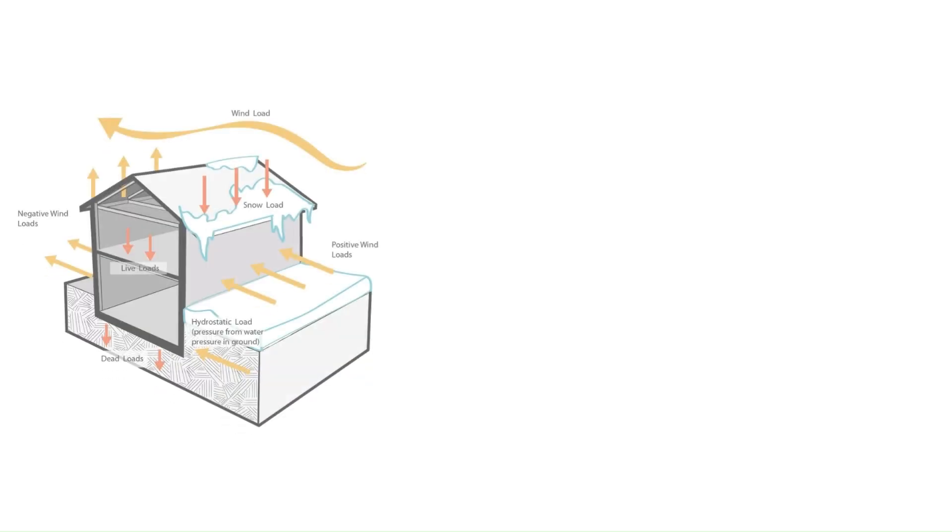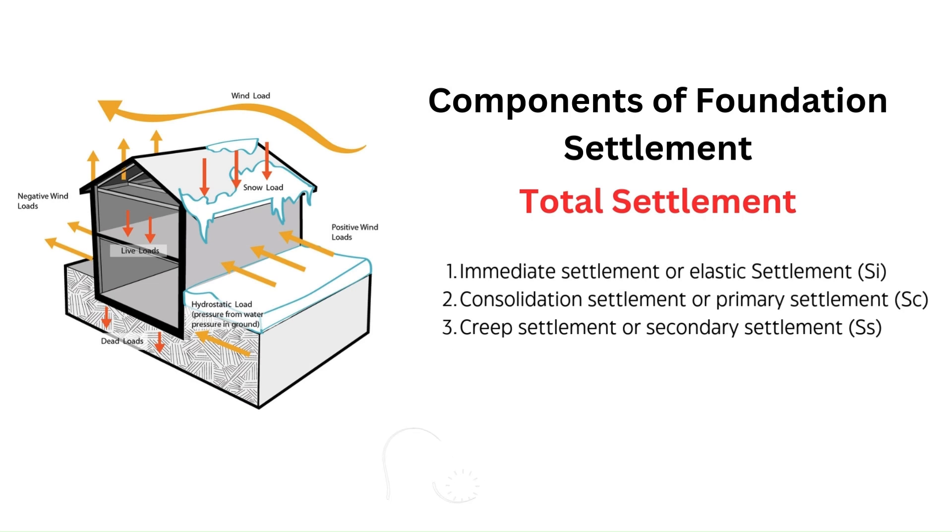When the load comes over a soil mass, three types of soil settlement are observed to occur. These settlements occur at different time periods during the life of the structure and they sum to form the total settlement of the foundation. The three components are immediate settlement or elastic settlement, consolidation settlement or primary settlement, and creep settlement or secondary settlement.